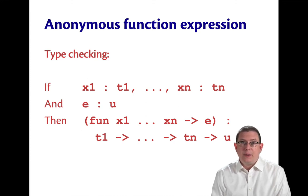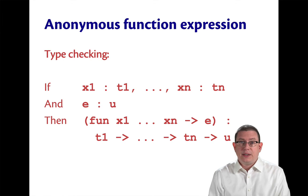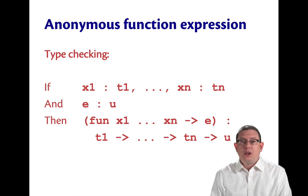So writing that down mathematically, if each of the arguments can be given a type, if x1 can be given the type t1, all the way up through xn given the type tn, and if the body of the anonymous function e has a type u, then the anonymous function expression fun x1 through xn arrow e has the type t1 arrow tn arrow u.